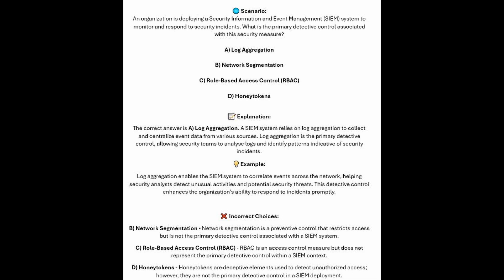For the incorrect answers: network segmentation is a preventative control that restricts access but is not the primary detective control associated with a SIEM system. RBAC or role-based access control is an access control measure but does not represent the primary detective control within a SIEM context. And honey tokens are deceptive elements used to detect unauthorized access; however, they are not the primary detective control in a SIEM deployment.